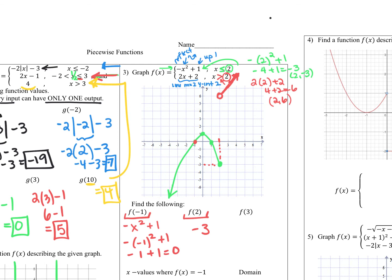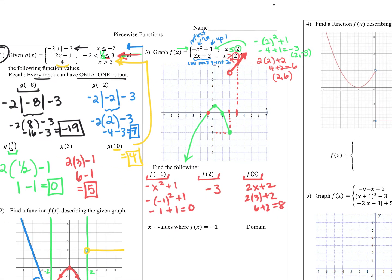For f of three, we use the 2x plus two portion. From the graph at x equals three it looks like eight. Let's plug in: two times three plus two is six plus two, which does get us eight. Now to find what x values give an output of negative one, I draw y equals negative one on the graph and see it touches the parabola twice.